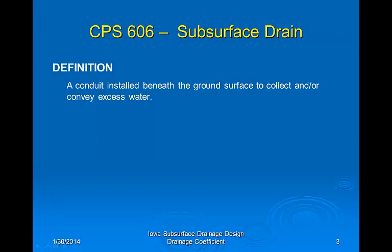Prior to the 1970s, sections of tile were the most common conduits used for subsurface drainage. Since then, corrugated plastic pipe, also referred to as tubing, has become the predominant material used.